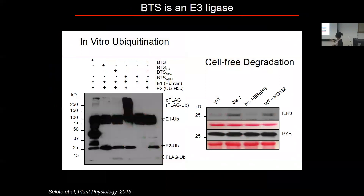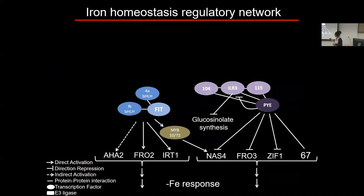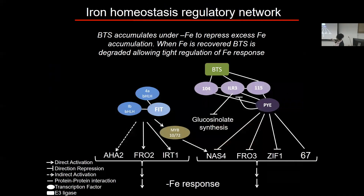Going back to the ubiquitination assay — when you remove the hemerythrin domain, you see a much more dramatic increase in mono-ubiquitin chain formation, suggesting the stabilized version is a stronger E3 ligase. The model is: in the absence of iron, transcriptional induction leads to Brutus protein accumulation; once the plant gets sufficient iron, it binds to Brutus and rapidly facilitates Brutus degradation, allowing tight control of iron homeostasis responses to changes in iron content.